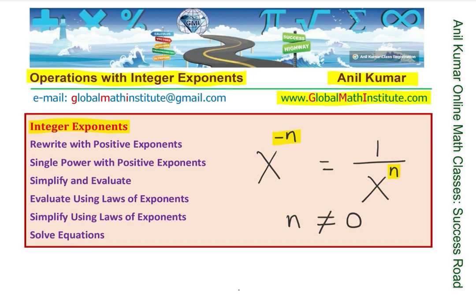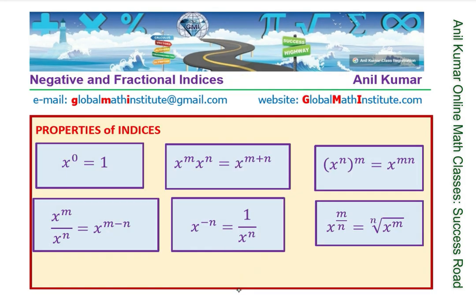The properties of exponents are: anything to the power of zero is one, and when we have the same base and we multiply them, the exponents get added. When we have power of a power, then they get multiplied. When we are dividing one by the other, the exponents get subtracted for the same base. The focus is mainly on x to the power of minus n equals 1 over x to the power of n. We will also consider radicals: x to the power of m over n, which really means it is the nth root when x is to the power of m.